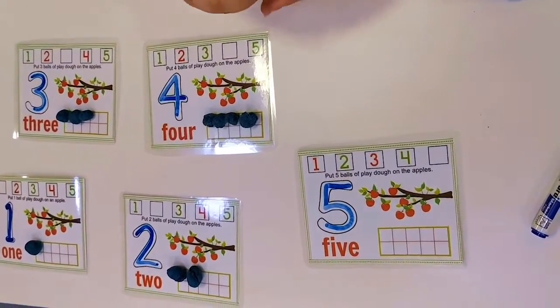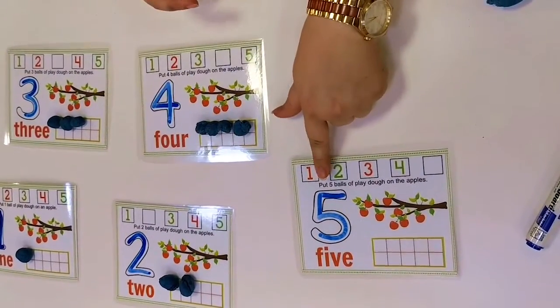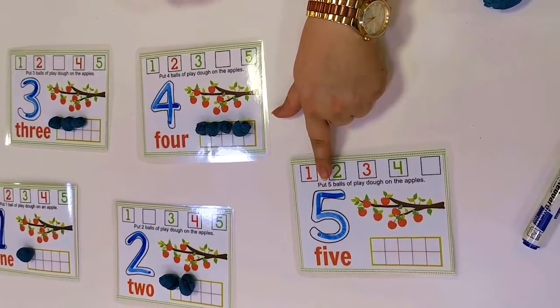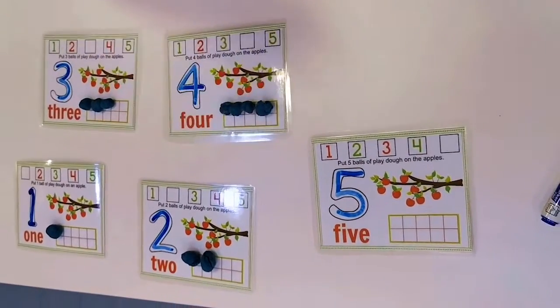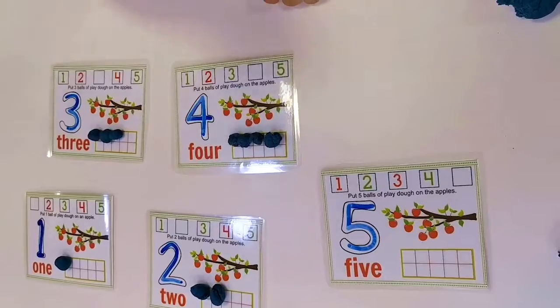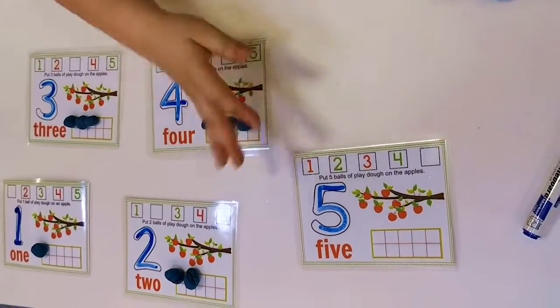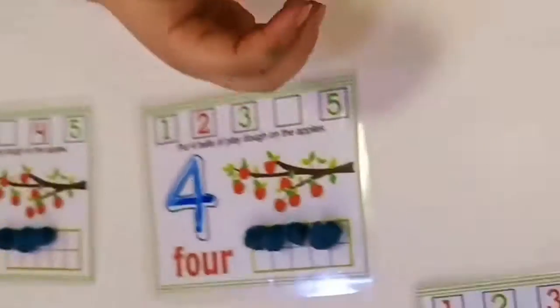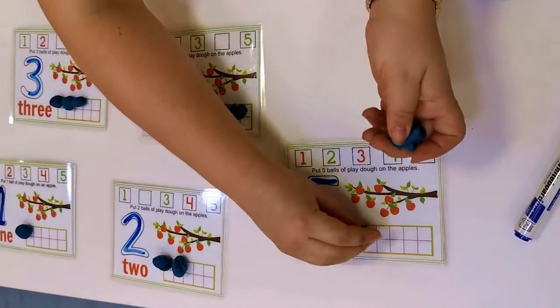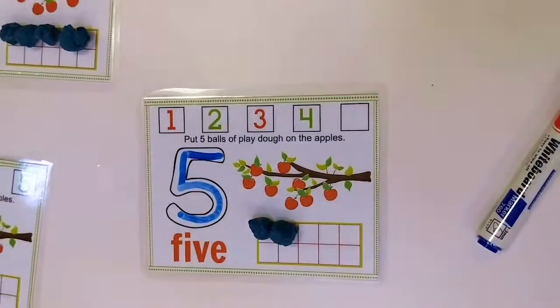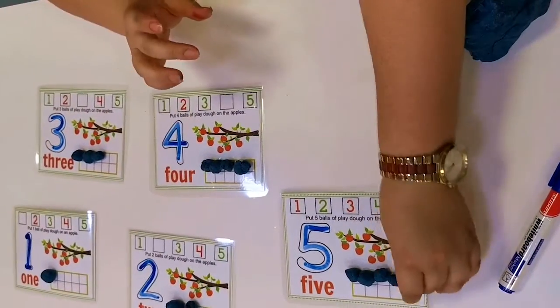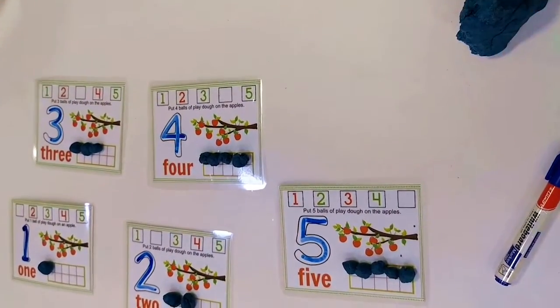Here it is number 5. Can we count to 5? 1, 2, 3, 4, and 5. High 5! Great! So we are going to make 5 apples. 1... 5. Great job!